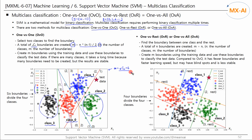OVR separates one class from the rest into a binary classification. This line is the decision boundary for class 0 and the rest, and this line is the decision boundary for class 3 and the rest. If the number of classes is N, then the total number of boundaries is also N. Use all N boundaries to predict the class of the test data. We'll learn more about this in the next video. OVO has many boundaries, so it takes more time, but the prediction results are more stable and perform better than OVR.